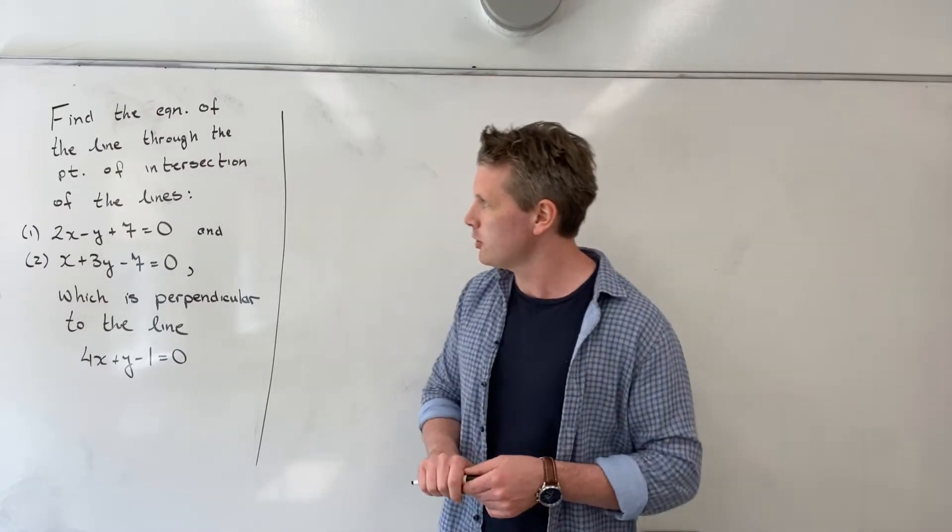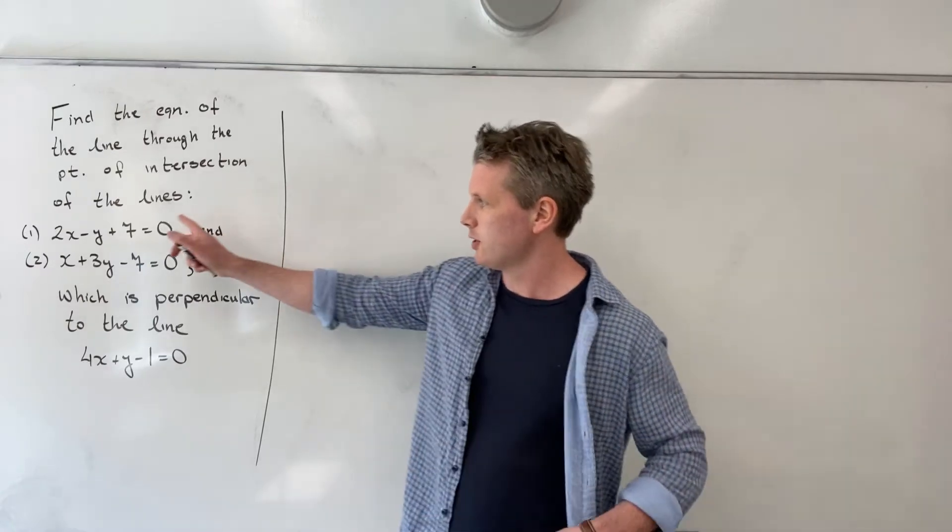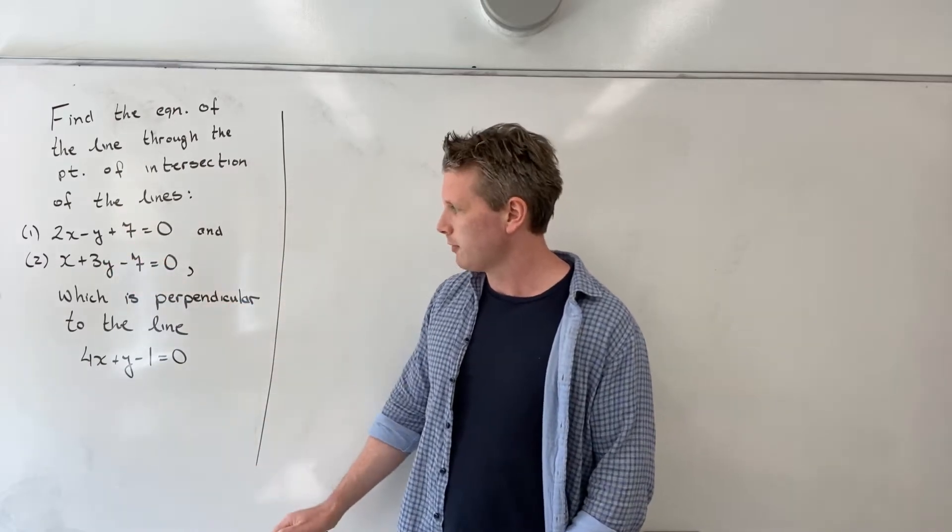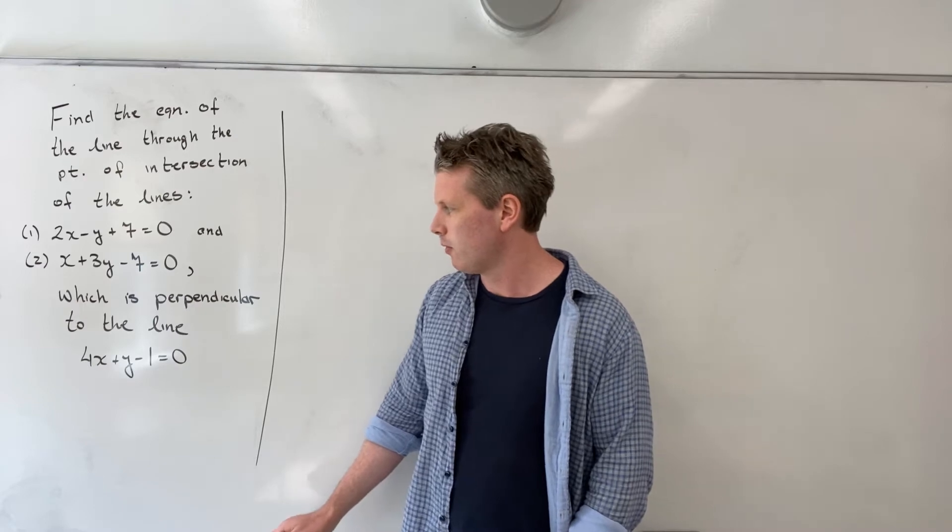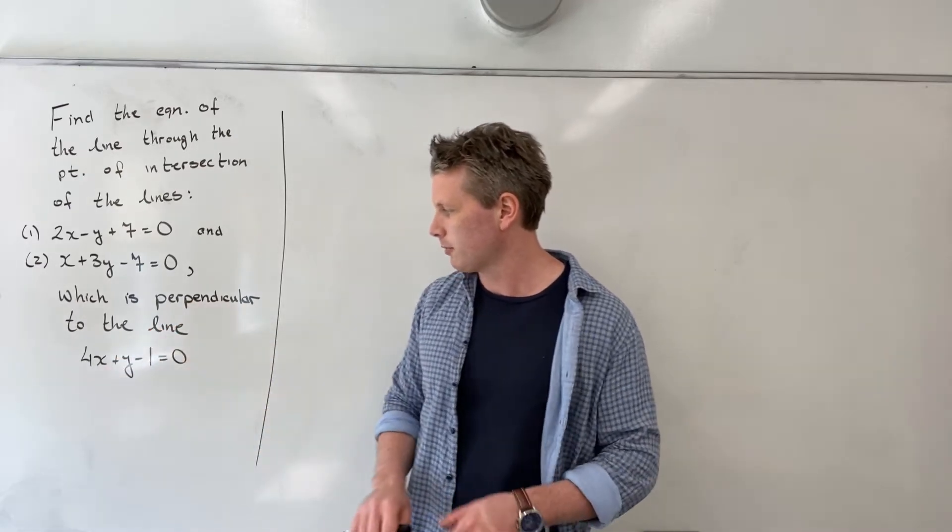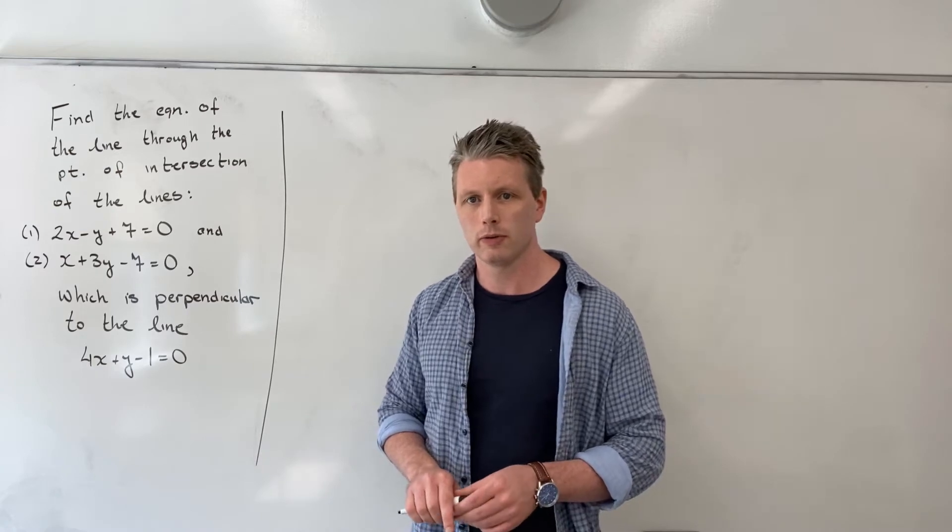It says find the equation of the line through the point of intersection of lines 2x minus y plus 7 equals 0 and x plus 3y minus 7 equals 0, which is perpendicular to this line right here, 4x plus y minus 1 equals 0.